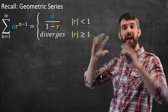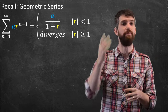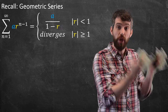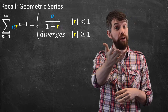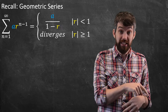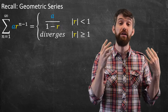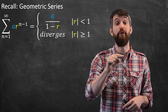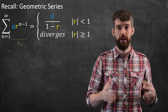It was the sum of a times that ratio r to the power of n minus 1. Whether the geometric series converged or diverged depended on that value of r: when the absolute value of r was less than 1, it not only converged but we knew what it converged to. And when the absolute value of r was greater than or equal to 1, it diverged.